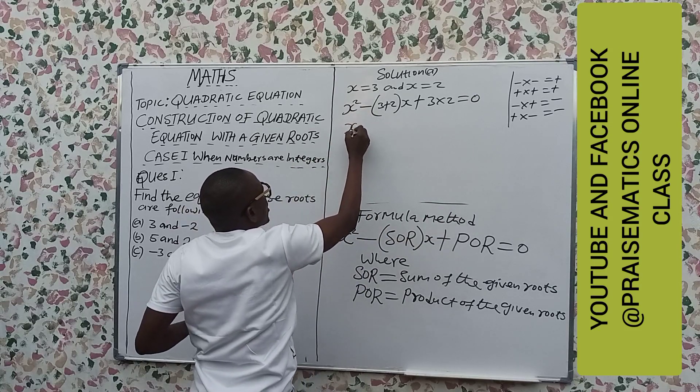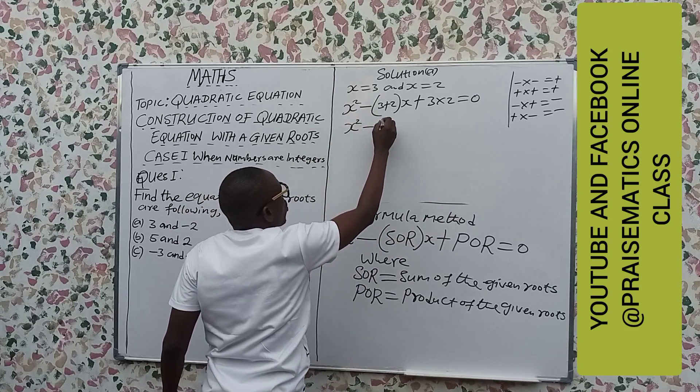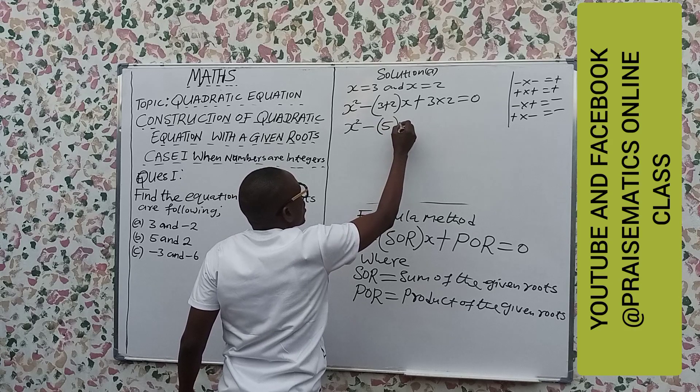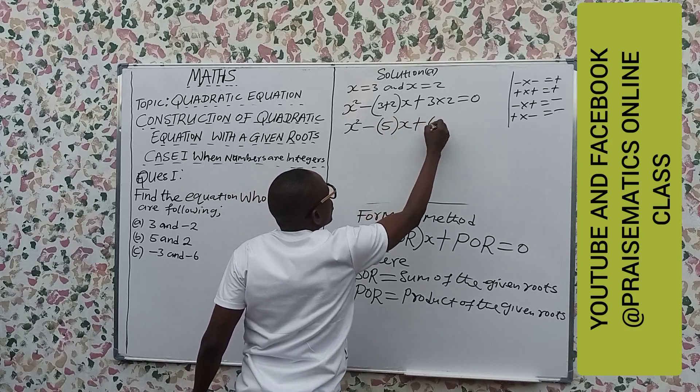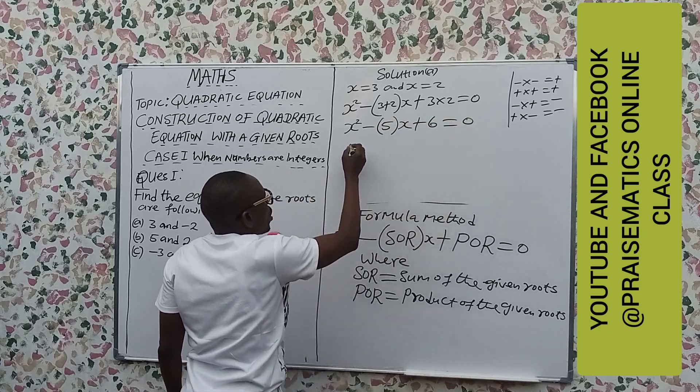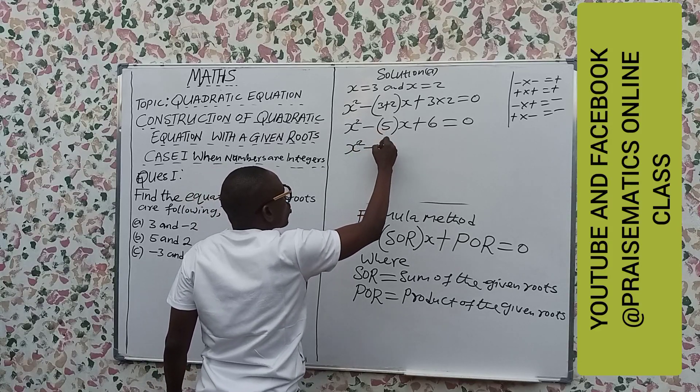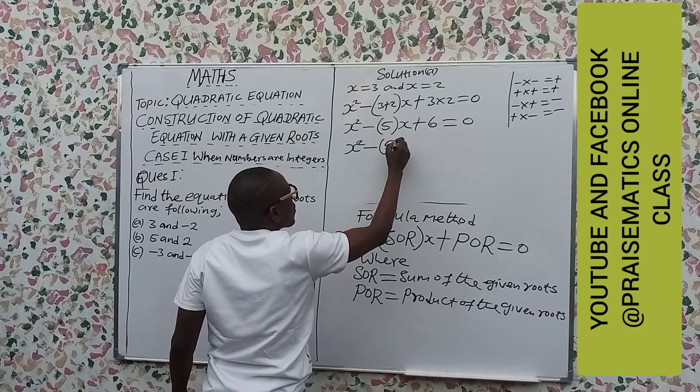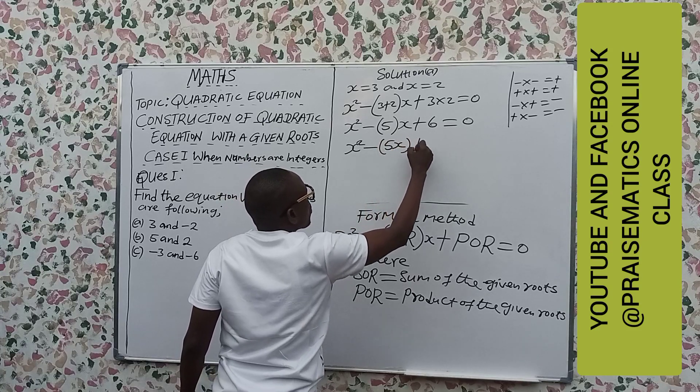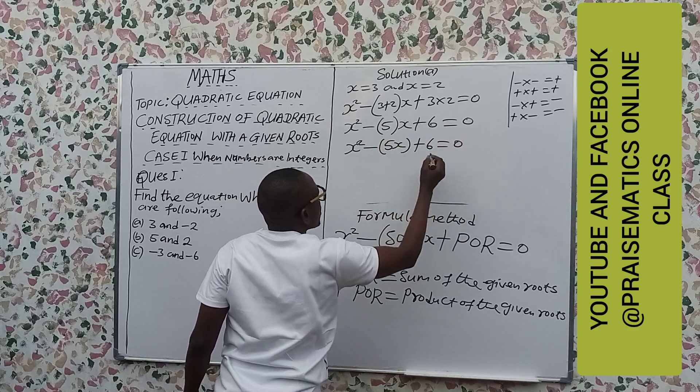Now what do we have here? x squared minus, into brackets, this is 3 plus minus 2 which is 1, so we have 1x, wait let me recalculate. x squared minus into brackets 3 plus minus 2 is 1x, close it, plus 3 times minus 2 is minus 6 equal to 0. We have x squared minus 1x, we have it as 1x, close it, minus 6 equal to 0.